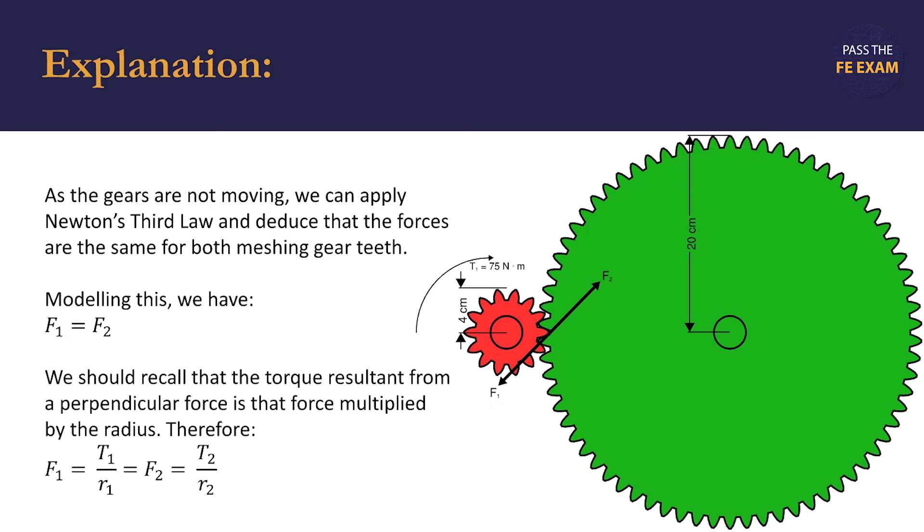We should then recall that the torque resultant from a perpendicular force is that force multiplied by the radius. Therefore, the force experienced by the smaller gear is equal to the torque applied to the smaller gear by the shaft divided by the radius of the smaller gear.